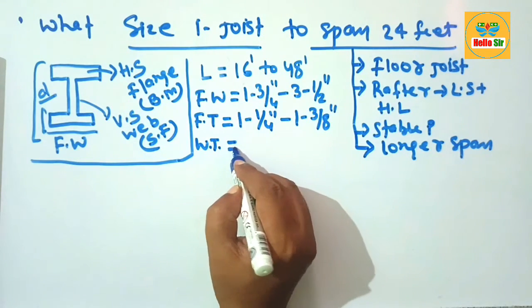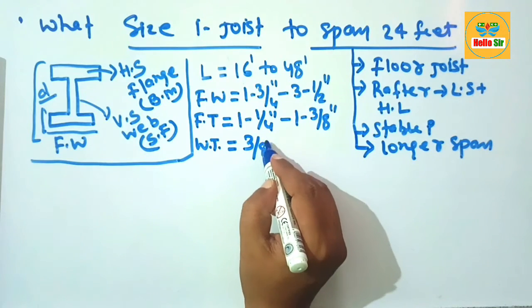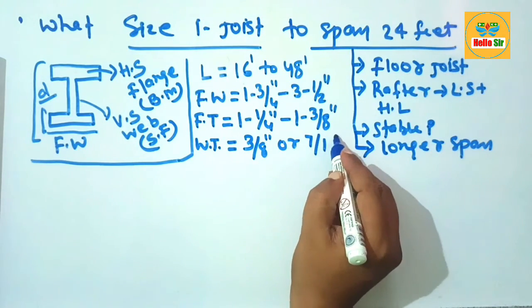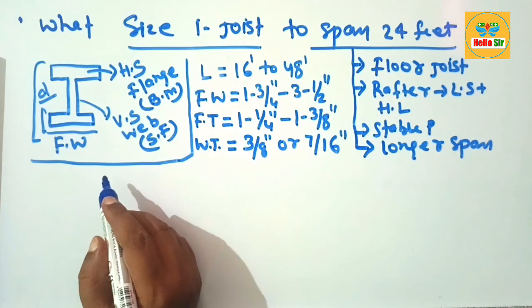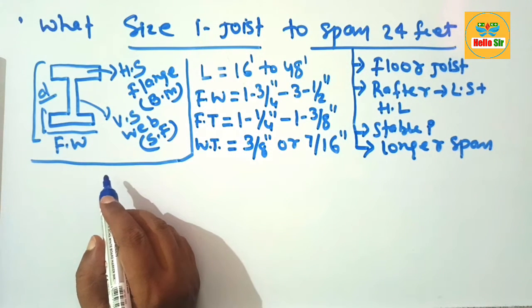The web thickness is 3/8 inch or 7/16 inch. These are the several dimensions for the I-joist. Here you have to calculate the I-joist size required to span 24 feet.